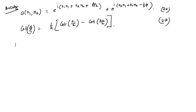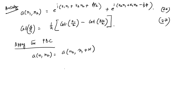With these C₁ and C₂, the Ansatz becomes A(n₁, n₂) = e^{i(k₁n₁ + k₂n₂ + φ/2)} + e^{i(k₂n₁ + k₁n₂ − φ/2)} (equation 26), where the phase φ is related to k₁ and k₂ by: cot(φ/2) = ½[cot(k₁/2) − cot(k₂/2)] (equation 27). We still need to find the allowed values of k₁ and k₂. Applying the periodic boundary condition A(n₁, n₂) = A(n₂, n₁+N) (equation 28) to equation 26 yields the quantization conditions.